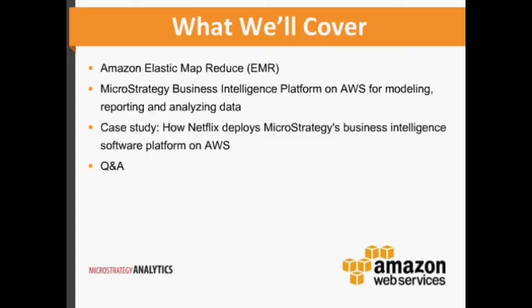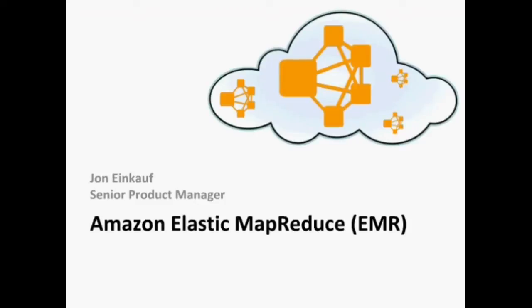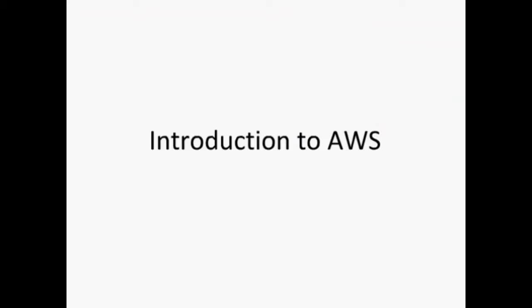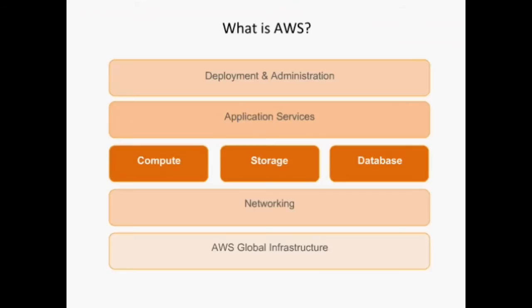Without further delay, let me turn it over to John, Product Manager with Amazon Web Services. I'm going to give a brief introduction to Amazon Web Services, followed by a brief introduction to Amazon Elastic MapReduce, which is the managed Hadoop service offered by Amazon. AWS is a collection of flexible IT services, including compute, storage, and database, but also including various networking services, application augmentation services, and other management services that you can use to manage and deploy your application.